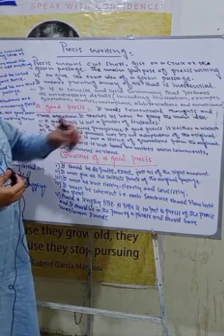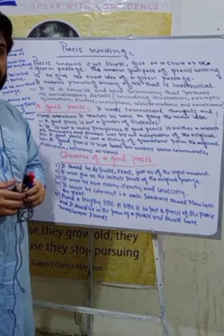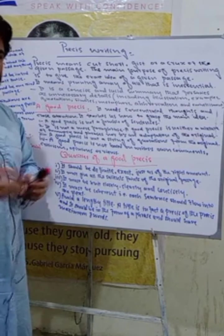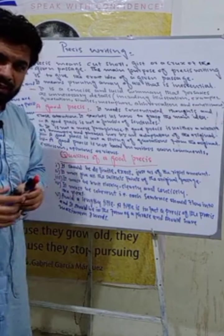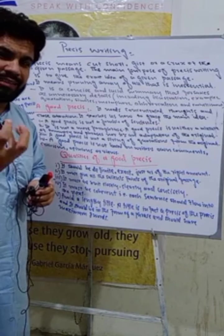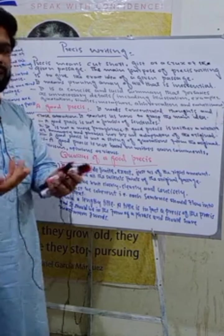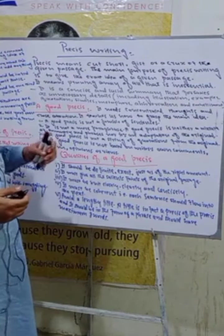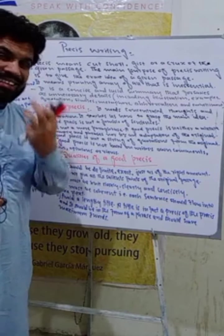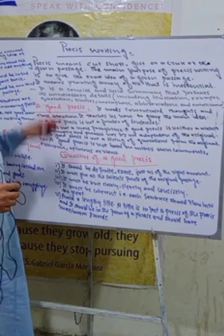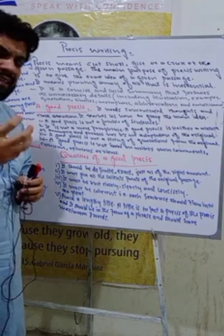The main purpose of precis writing is to give the exact idea of a given passage. بہت سارے لوگ کے پاس اتنا وقت نہیں ہوتا کہ وہ پورے لمبے passages پڑھیں — وہ چاہتے ہیں کہ اس passage کا crux کیا ہے، gist کیا ہے، basic theme کیا ہے۔ اس theme کو آپ نے precis میں بتانا ہوتا ہے ایک proper sequence میں۔ That's what precis writing is — a concise and lucid summary that forsakes all unnecessary details.